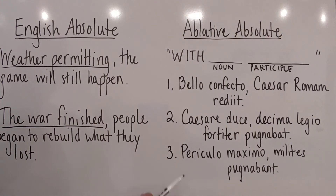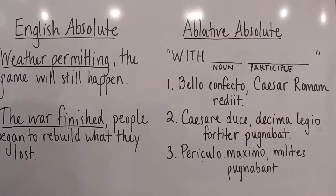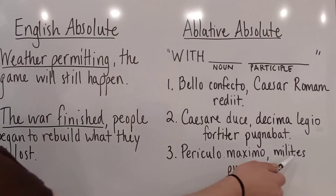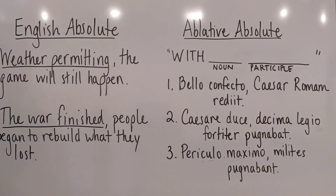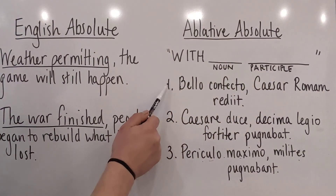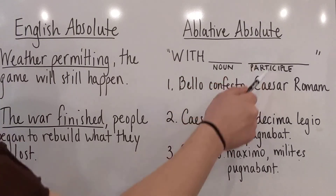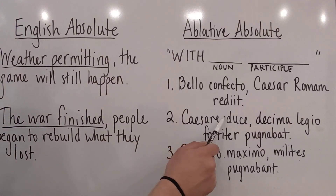The last kind of ablative absolute — number three, and the rarest — is a noun and an adjective with an implied 'being,' like the second type. For example: 'With the danger being the greatest.' Don't ever translate this as 'with greatest danger' — that's not what it says. 'With the danger being the greatest, the soldiers were fighting.' This is a good example of a concessive translation: 'Although the danger was the greatest, the soldiers were fighting.' So to summarize: for type one, start with 'with the noun participle'; for type two, 'with the noun being a noun'; for type three, 'with the noun being an adjective.' For types two and three, you'll need to add the implied participle 'being,' which Latin does not have.